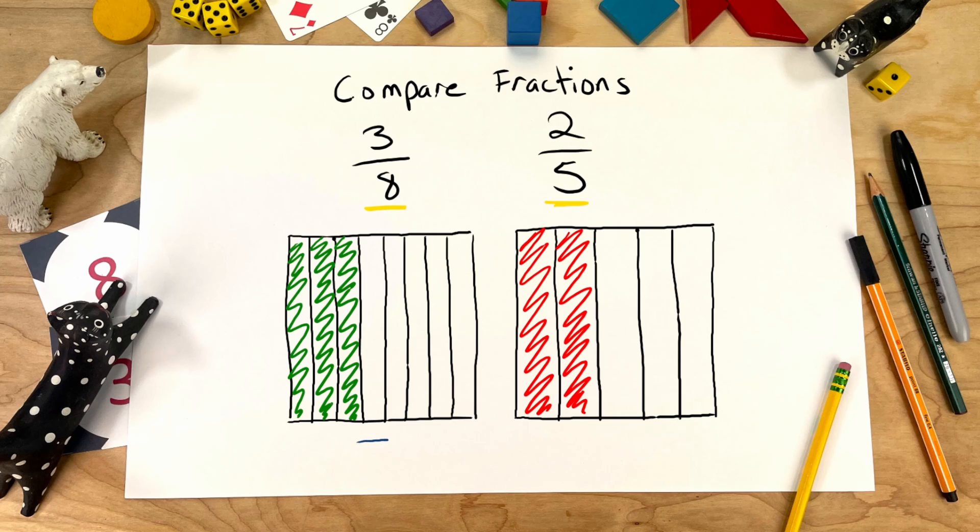Right now, everything over here is in 8 pieces and everything over here is in 5 pieces. Can we make them the same number of pieces so we can compare them the right way? Let's try that. So, over here where we have eighths, let's divide it into fifths as well.